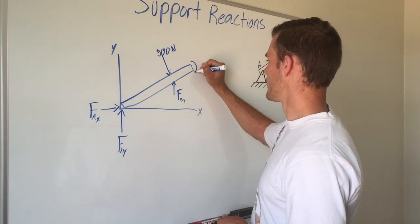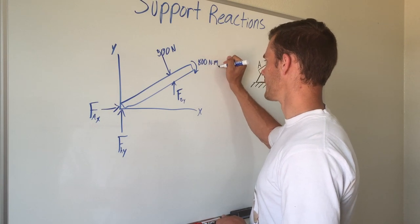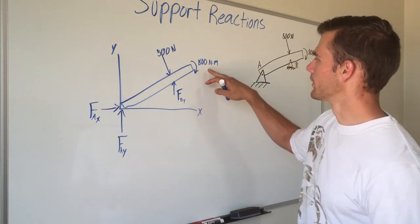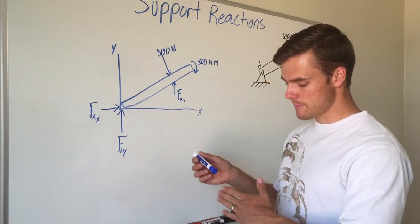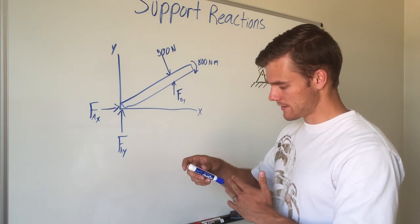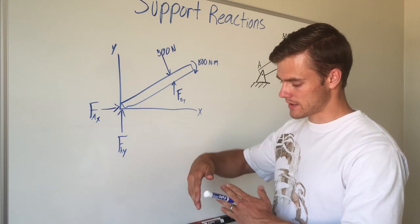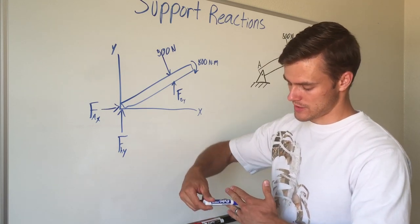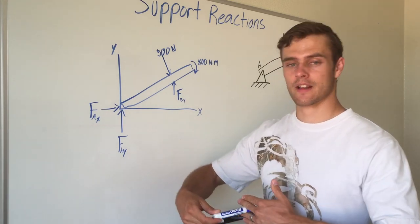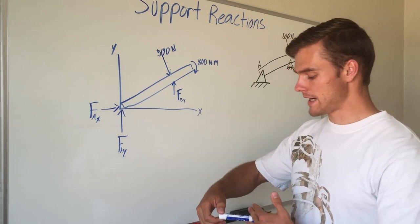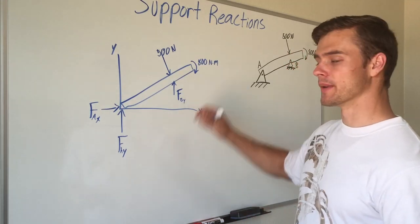We then draw the other forces: 500 newtons perpendicular to the surface of the beam, and a point moment of 800 newton-meters. A point moment occurs when something causes rotation at a specific location on the beam — for example, a rod with a load or a motor trying to rotate the beam at that point.